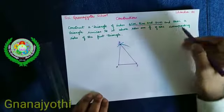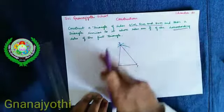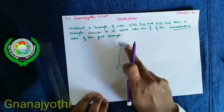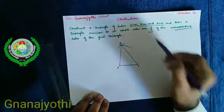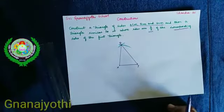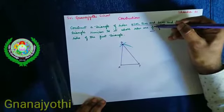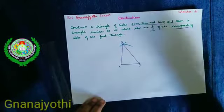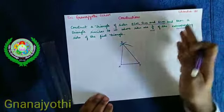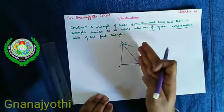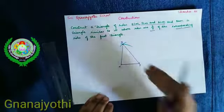Now we need to construct another triangle corresponding to the first triangle. Observe children: the numerator is lesser than the denominator. Therefore, the corresponding triangle comes inside the first triangle.